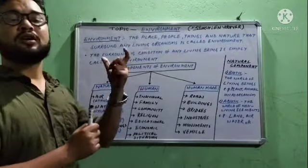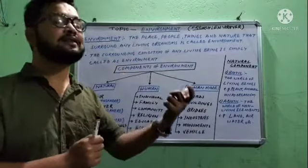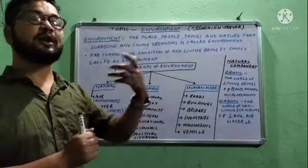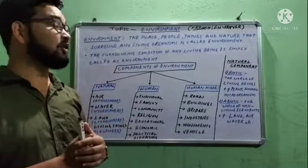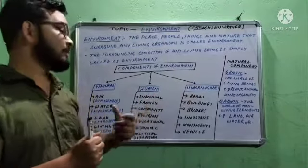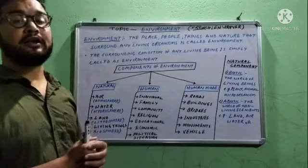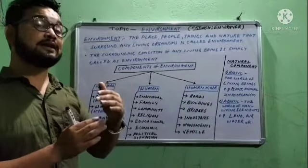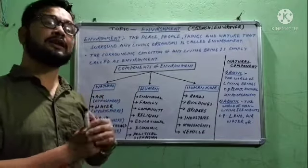Natural components are those which are created naturally. Human-made components are those which are created by human beings. These are called human-made components of the environment. Next is the human component of the environment — it is not human-made; rather, the human itself is a component of the environment.